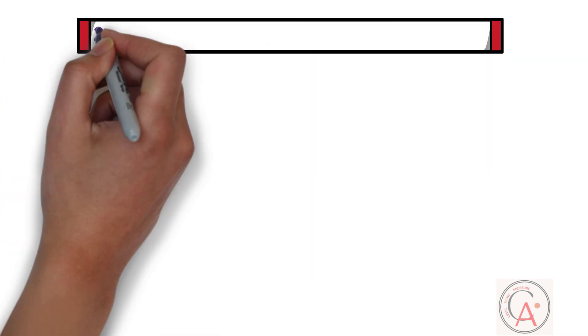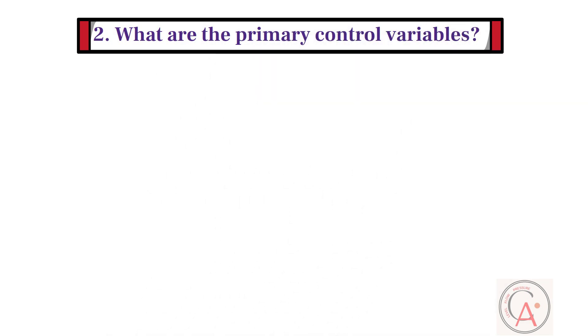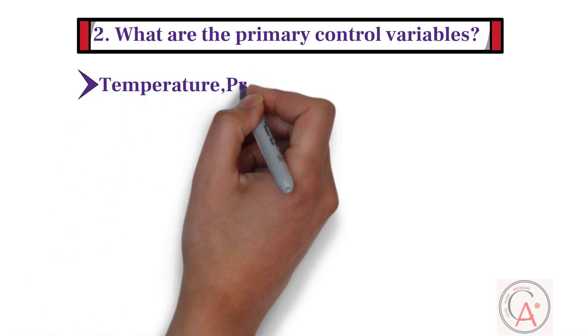Second question is, what are the primary control variables? The primary control variables are temperature, pressure, flow, and level.